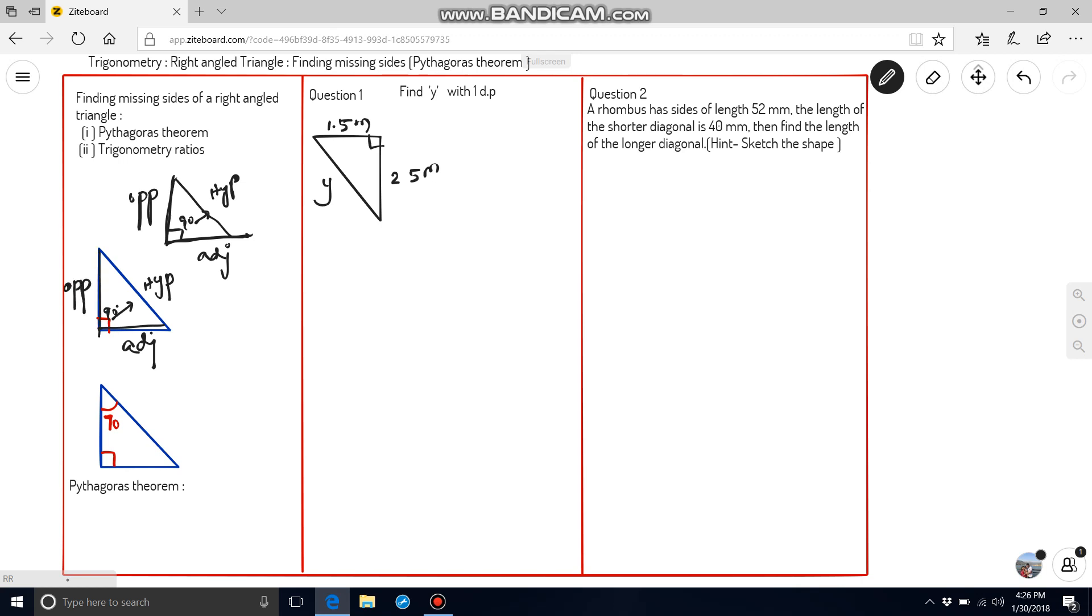In example 2, along with 90, we have one more angle 70 degree. So, whenever we have another angle with 90 degree, that particular line will be considered as adjacent. The rest of the line will be opposite and hypotenuse.